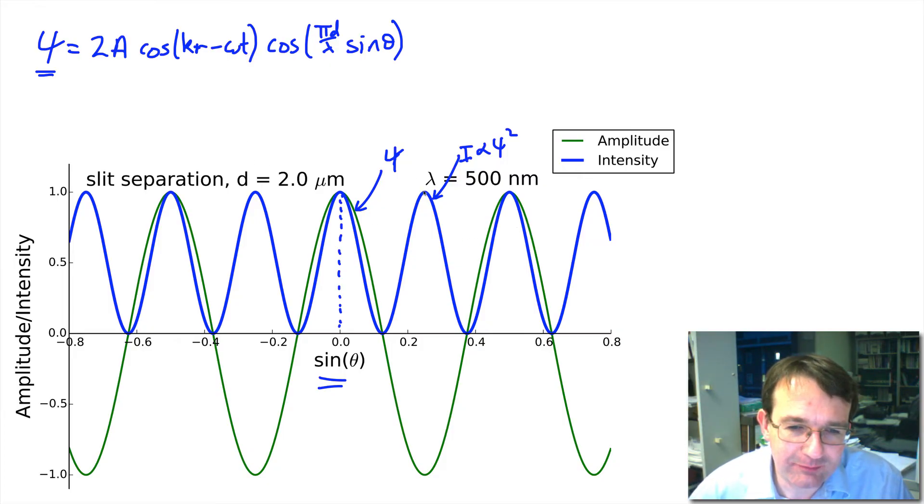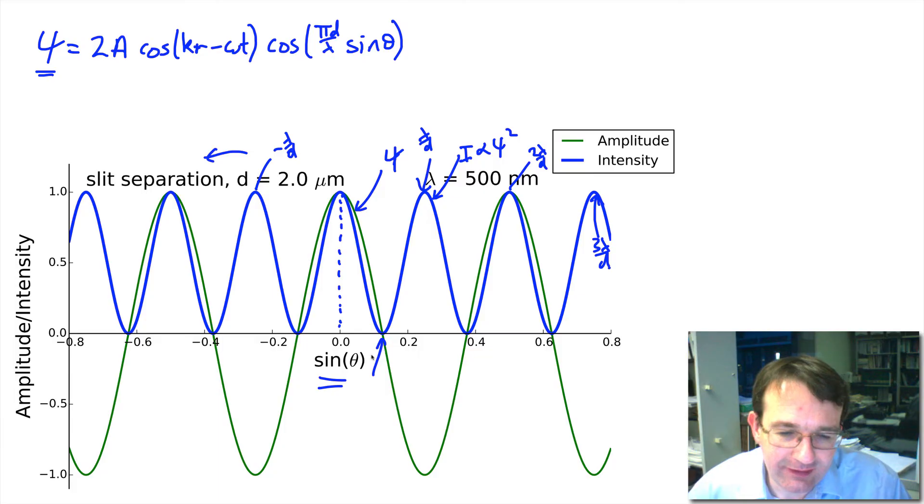The peak of this fringe occurs at lambda over d, this one is at 2 lambda over d, this one here is at 3 lambda over d. And of course we have the ones here at minus lambda over d and so on as we go in this direction. So they're all equally spaced and of course we could easily come up with an argument for an expression for the zeros which lie halfway in between the maximum points.